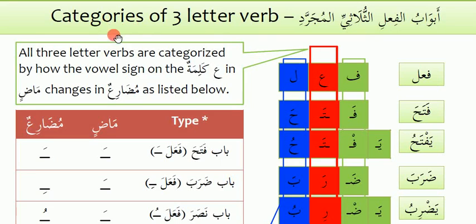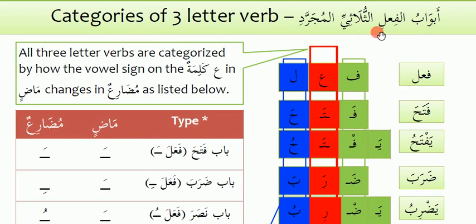Children, this one I am adding because of your better understanding. As I have already told you in last chapters, there are three letter verbs. The categories of three letter verbs are: Avabu, Failus, Salasiyah, Almujarrit.